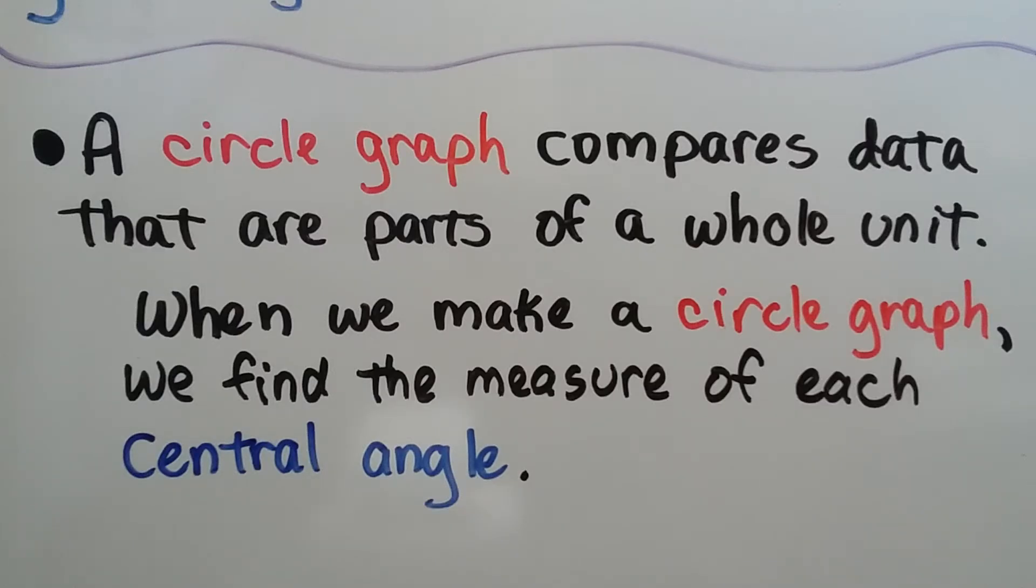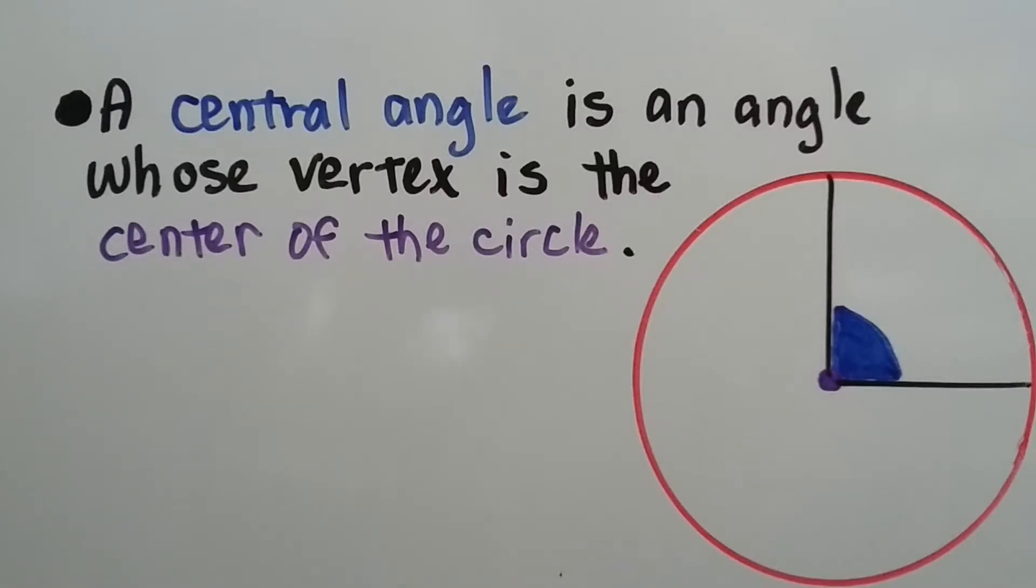A circle graph compares data that are parts of a whole unit. When we make a circle graph, we find the measure of each central angle. A central angle is an angle whose vertex is the center of the circle. So this blue area here is a central angle.